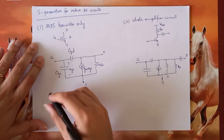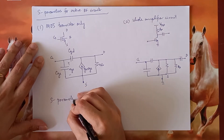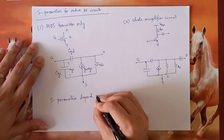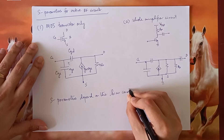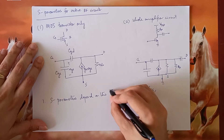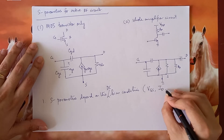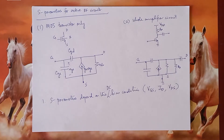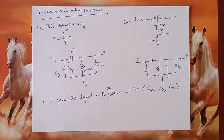The S-parameters are a function of the bias condition. What defines the bias condition? The gate-to-source DC voltage VGS, the DC drain current ID, and the drain-to-source DC voltage VDS — these are the three major criteria. So the first thing to remember is that the S-parameters of any RF device or circuit depend heavily on the DC bias. If you look at data sheets or RF active circuit products available in the market, you will see that their S-parameters are always specified for a given bias condition. This is extremely important to remember.